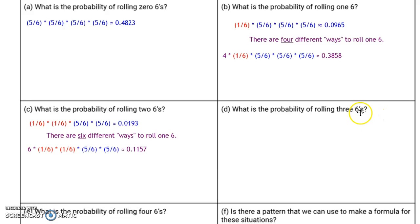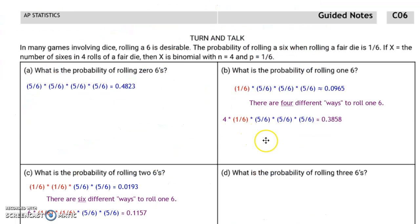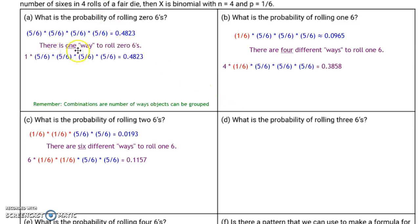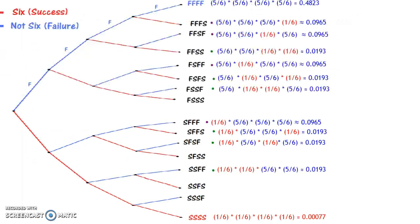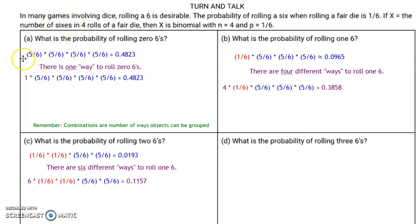The probability of rolling three 6s has the same situation, but instead of using the tree diagram, we're going to use our probability rules — specifically something called combinations, which you should remember from probability. There's one way to roll zero sixes; four different ways to order one success and three failures; and six different ways to order two successes and two failures. The mathematical process to figure this out is called a combination, and there's a formula for it just like any other mathematical process.